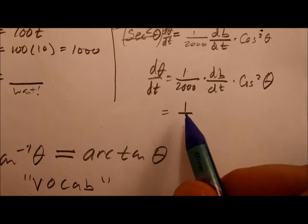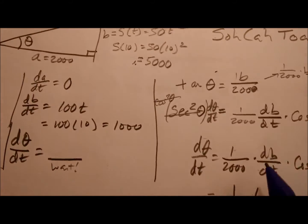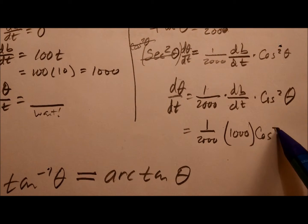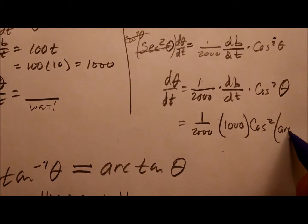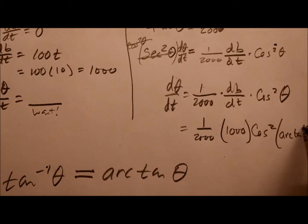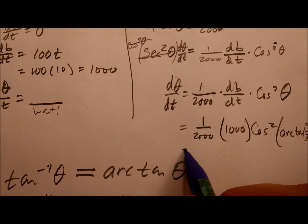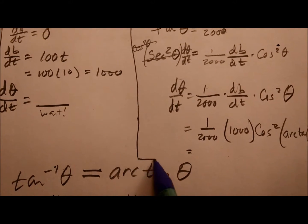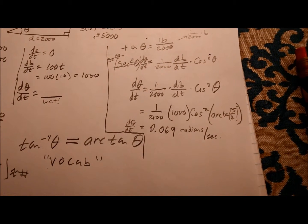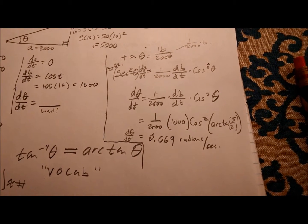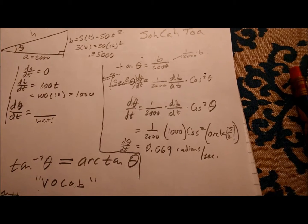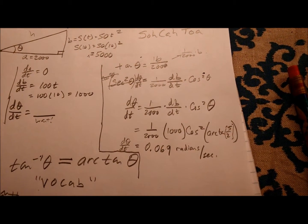At this point, I can plug in 1 over 2,000. Now DBDT from earlier we said was 1,000, and then cosine squared of the arctangent of 5 halves. And you can use radians to find this, that's what I usually stick with. And I'll let me go find the number, I'll be right back. Okay, so I went and I typed it all into Google because I forgot to bring my calculator home, and I got 0.0689 or something like that, and I rounded up to 0.069 radians per second.